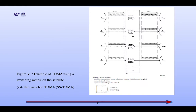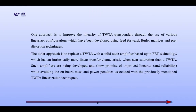It is another example of TDMA using a switching matrix of the satellite. One approach is to improve the linearity of TWTA transponders through the use of various linearizer configurations, which have been developed using feed-forward, Butler matrix, and pre-distortion techniques. The other approach is to replace a TWTA with a solid-state power amplifier based on FET technology, which has an intrinsically more linear transfer characteristic when near saturation than a TWTA. Such amplifiers show promise of improved linearity and reliability, while avoiding the onboard mass and power penalties associated with TWTA linearization techniques.